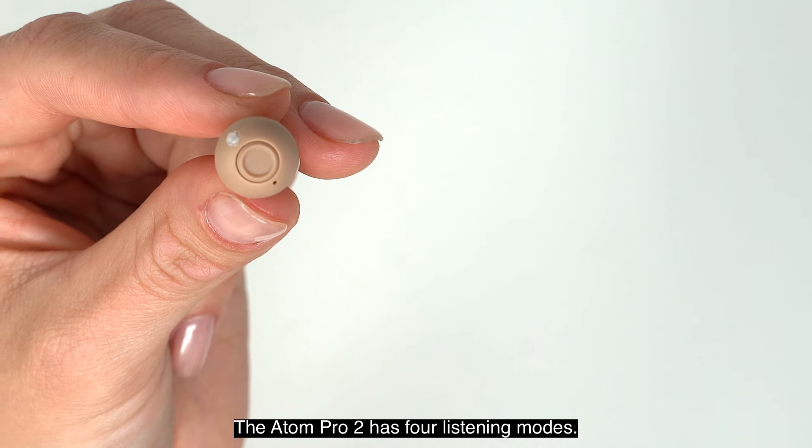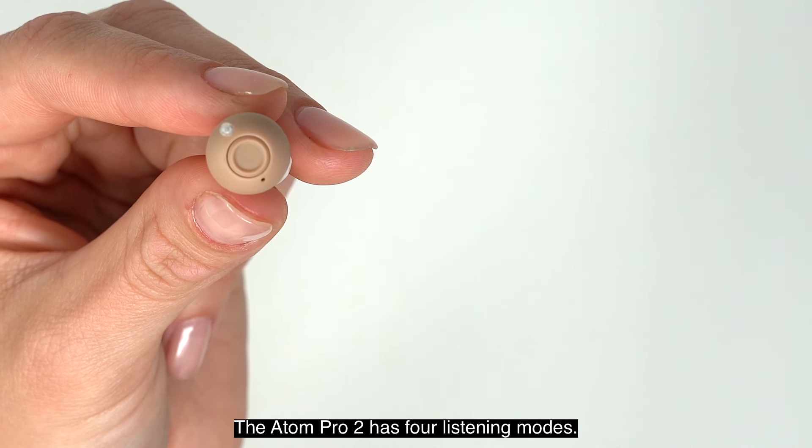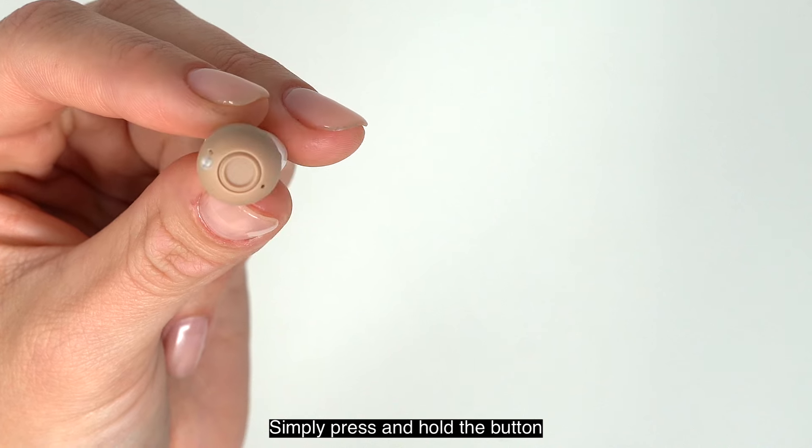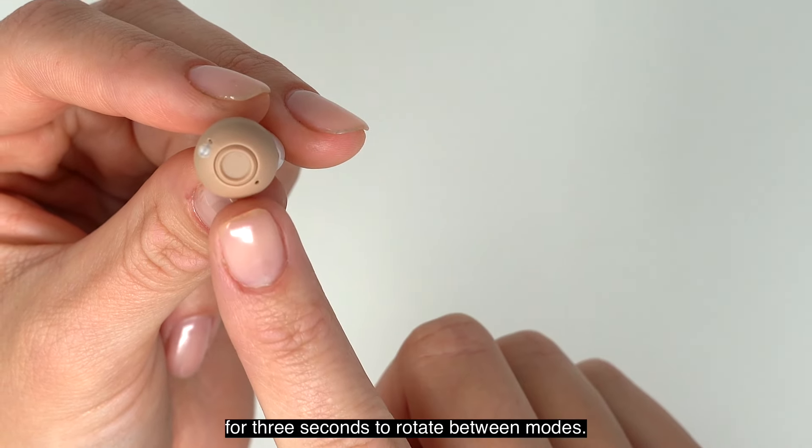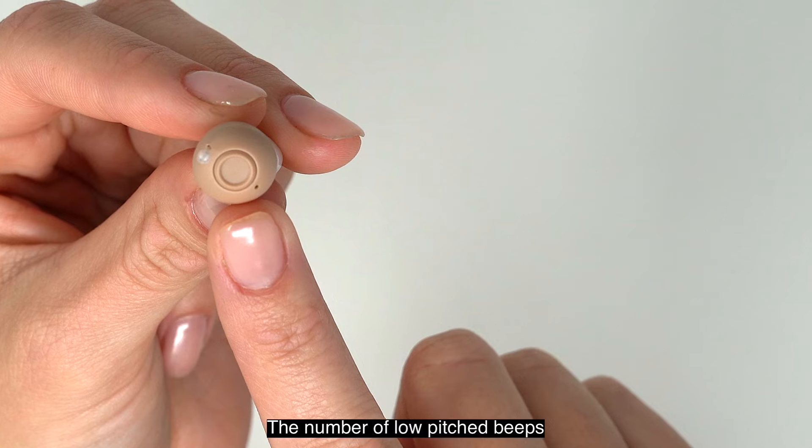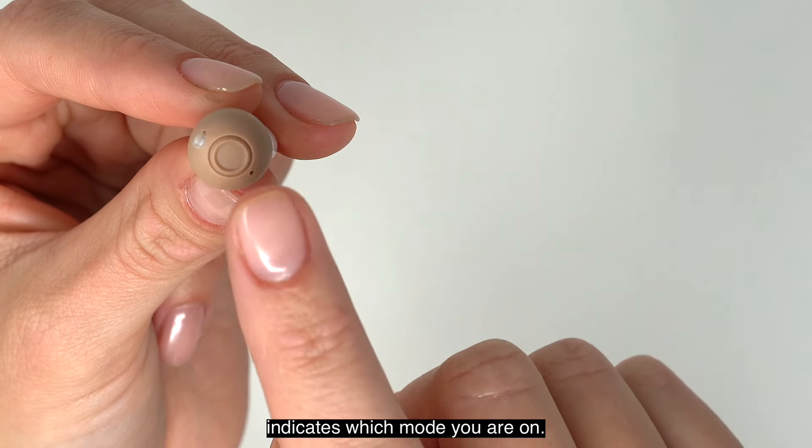Switching modes. The Atom Pro 2 has four listening modes. Simply press and hold the button for three seconds to rotate between modes. The number of low-pitched beeps indicates which mode you are on.